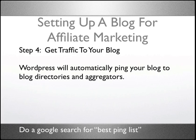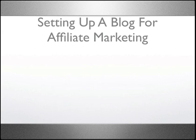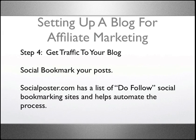Get traffic to your blog. WordPress will automatically ping your blog to blog directories and aggregators. Do a Google search for best ping list, grab it, and copy it in. What I use is Smart Update Pinger — it's a plugin and it's free. Every blog gives you an RSS feed. Submit your RSS feed to RSS directories for instant backlinks whenever you post to your blog. Every time you post, normally within an hour, these RSS directories will give you a new link to your new post, getting you more links and helping your blog posts get indexed much faster. Social bookmark your posts — Socialposter.com is a semi-automated website with a list of do-follow social bookmarking sites that help automate the process.